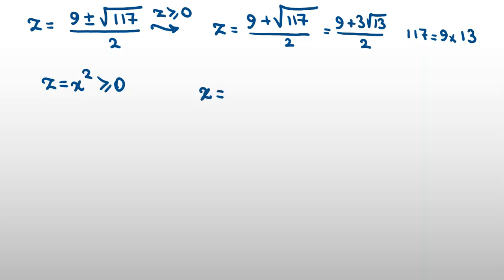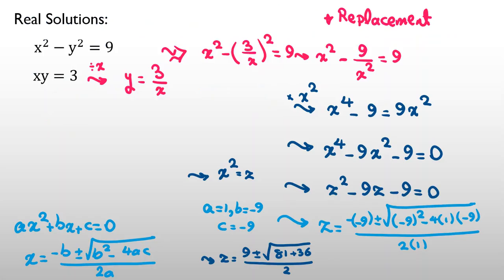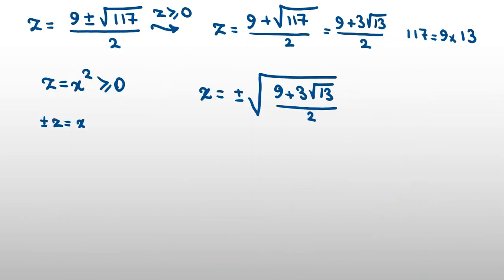And we want to find x. So, x will be, because we know x is plus minus square root of z. It will be plus minus square root of 9 plus 3 root 13, all over 2. And if you want to find y, we know y equal to 3 over x. So, y will be 3 over plus minus square root of 9 plus 3 root 13, all over 2.